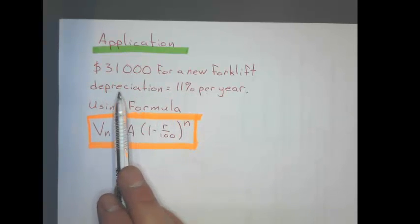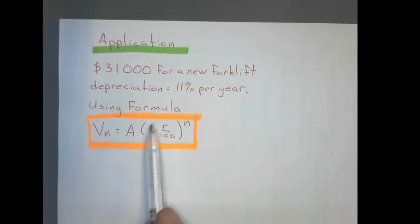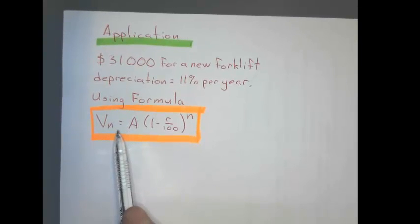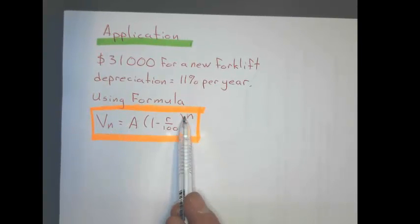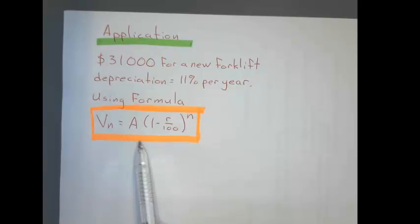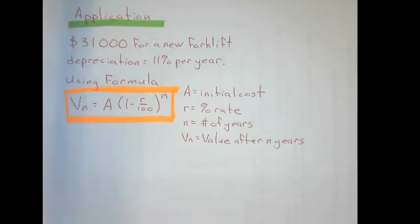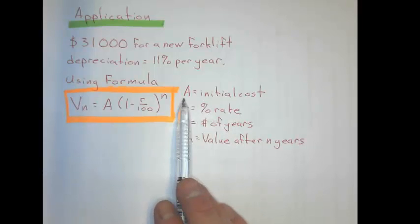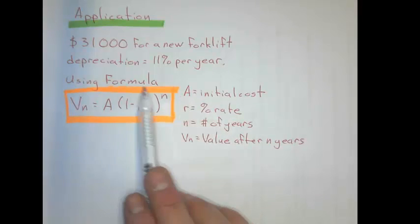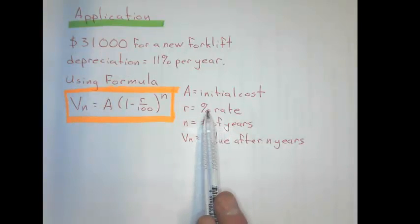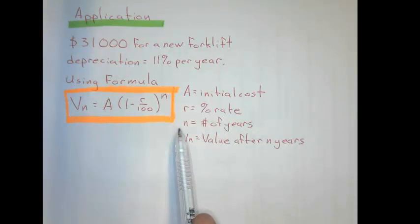$31,000 for a new forklift. It depreciates 11% per year. Using the formula that we're going to use right here, and I'll tell you what each value means. It's kind of self-explanatory, but we'll spell it out for you. Okay, so that's what each of those variables means. The initial cost in this problem is $31,000. The depreciation rate is 11%, and the number of years will work out.